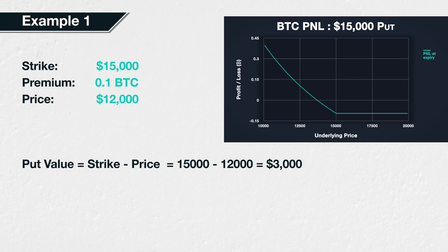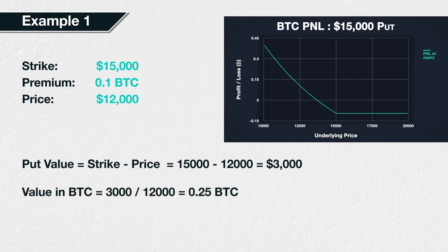So how much is this in Bitcoin? We know that the current price of Bitcoin is now $12,000. So $3,000 has a value of 0.25 Bitcoin, or a quarter of a Bitcoin. This is calculated as 3,000 divided by 12,000, which equals 0.25. This means that when the option expires, we will receive 0.25 BTC into our account.